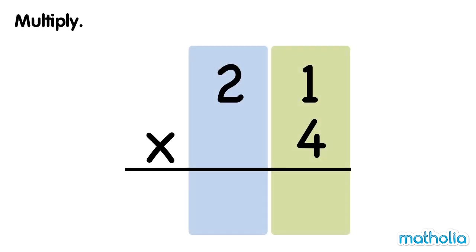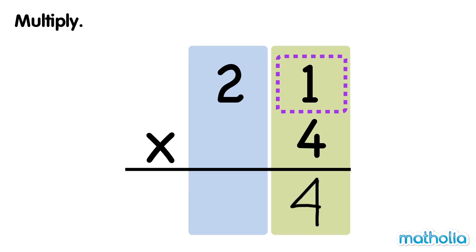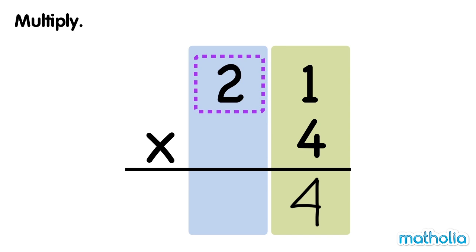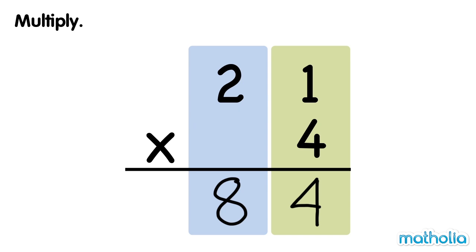Let's find 21 times 4. First, multiply the ones by 4. 1 one times 4 equals 4 ones. Next, multiply the tens by 4. 2 tens times 4 equals 8 tens. 21 times 4 equals 84.